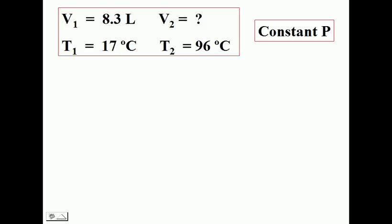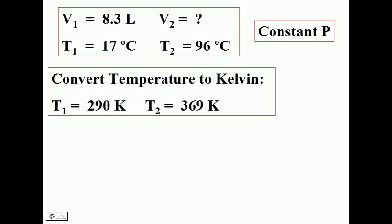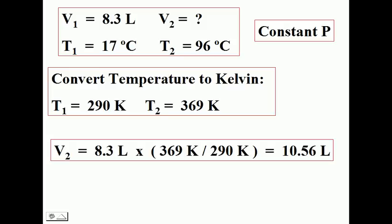Let's look at a second Charles' Law problem. We are changing the temperature and looking at the effect on volume while pressure remains constant. First, convert your temperatures to Kelvin. Set up your original volume and look at what you expect. If temperature has gone up, you expect volume to go up likewise — set up your ratio greater than 1 and you will get your increase in volume.